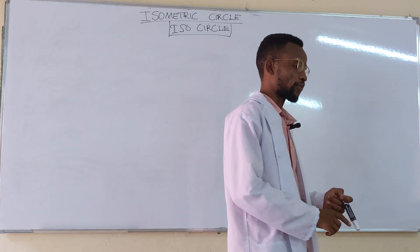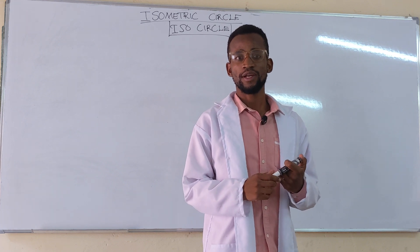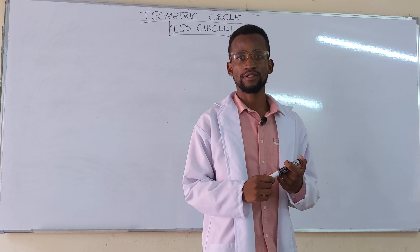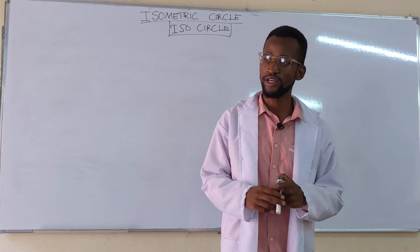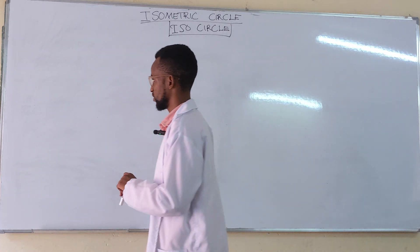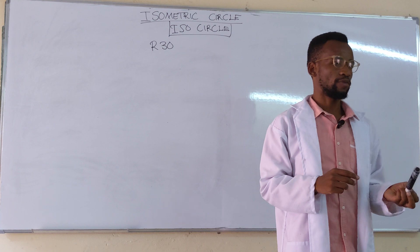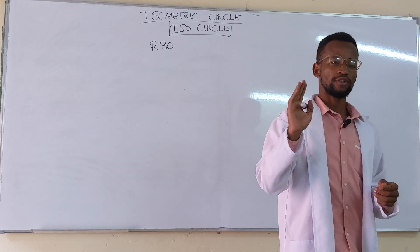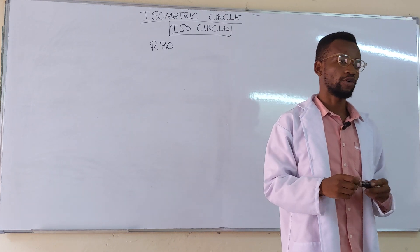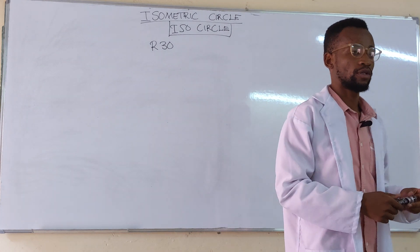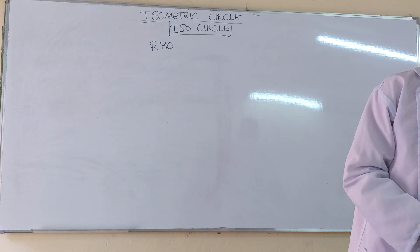Let's look at how we can draw an isocircle. We're going to start with a cube that has a length of 60 millimeters. We're going to draw an isocircle of radius 30, meaning we'll start with a box that has length 60 millimeters. Since we want to draw all three circles — one on top, one on the front view, and one on the end — we start with a cube with side lengths of 60 millimeters.